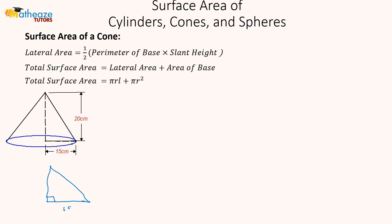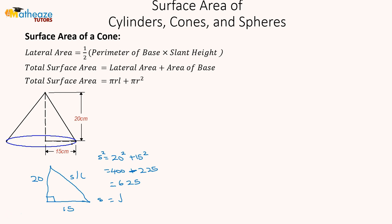We have 15 here and 20 here, and we need to find S, the slant height — some may refer to it as L. S squared is equal to 20 squared plus 15 squared, which is 400 plus 225, which gives us 625. So S is the square root of 625, which is 25.